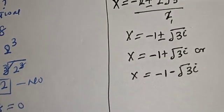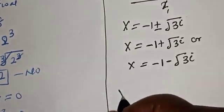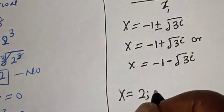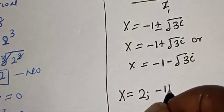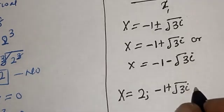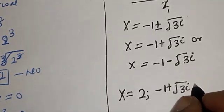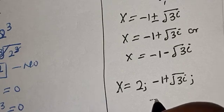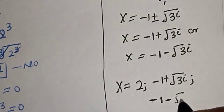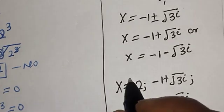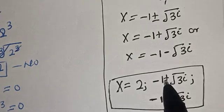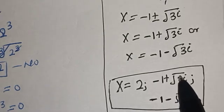Therefore our final answers are s is equal to 2, s is equal to minus 1 plus root 3i, and s is equal to minus 1 minus root 3i. That is the value of s. See you in the next video. Thank you. Bye-bye.